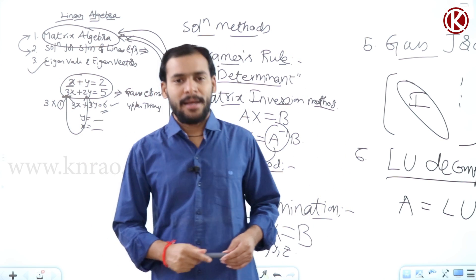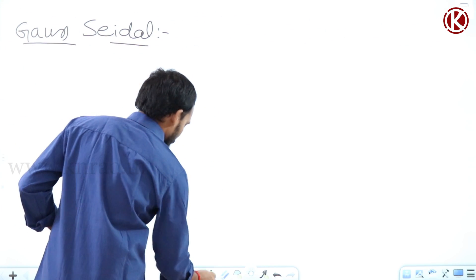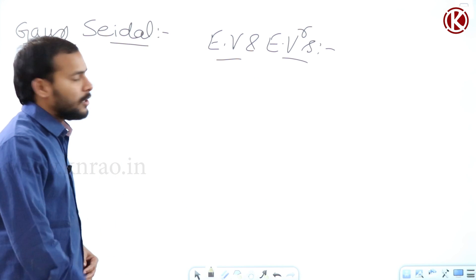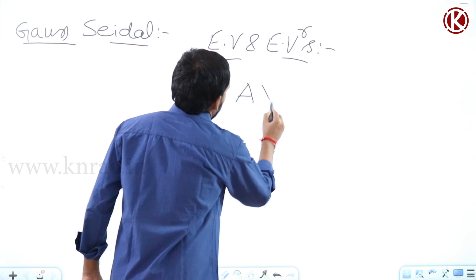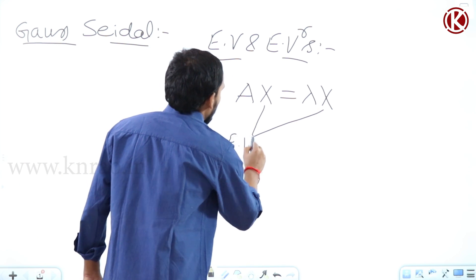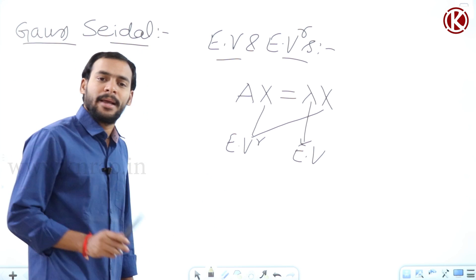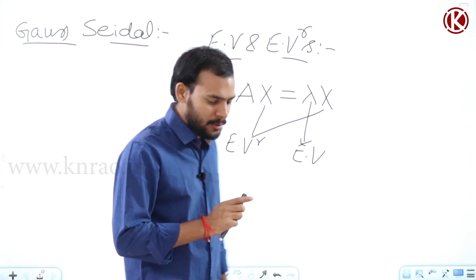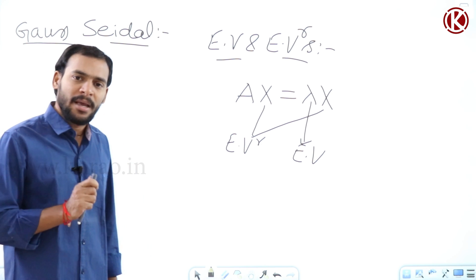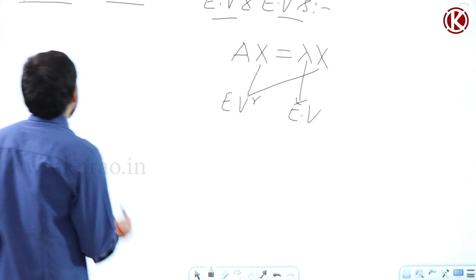Coming to the next topic, which is the most important from an applications point of view — eigenvalues and eigenvectors. We can explain eigenvalues and eigenvectors using the expression Ax equals lambda x, where x is called the eigenvector and lambda is called the eigenvalue. Our goal in linear algebra is to find the eigenvalues and corresponding eigenvectors.